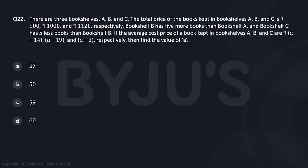It is given that there are three bookshelves A, B, and C. The total price of the books kept in the bookshelves - if you write down total price, it is given as 900, 1000, and 1120.